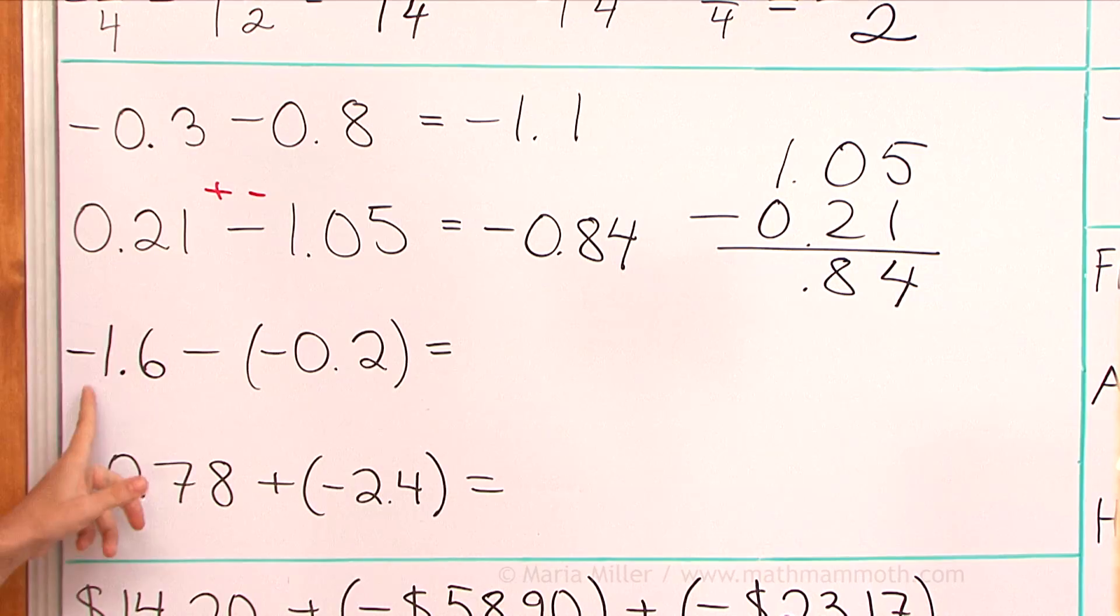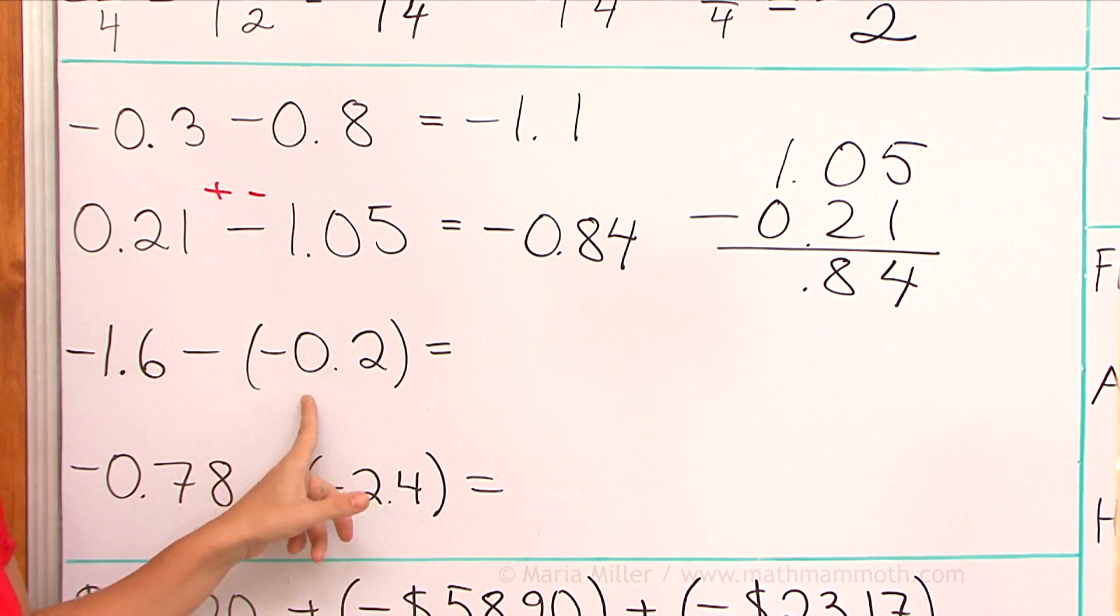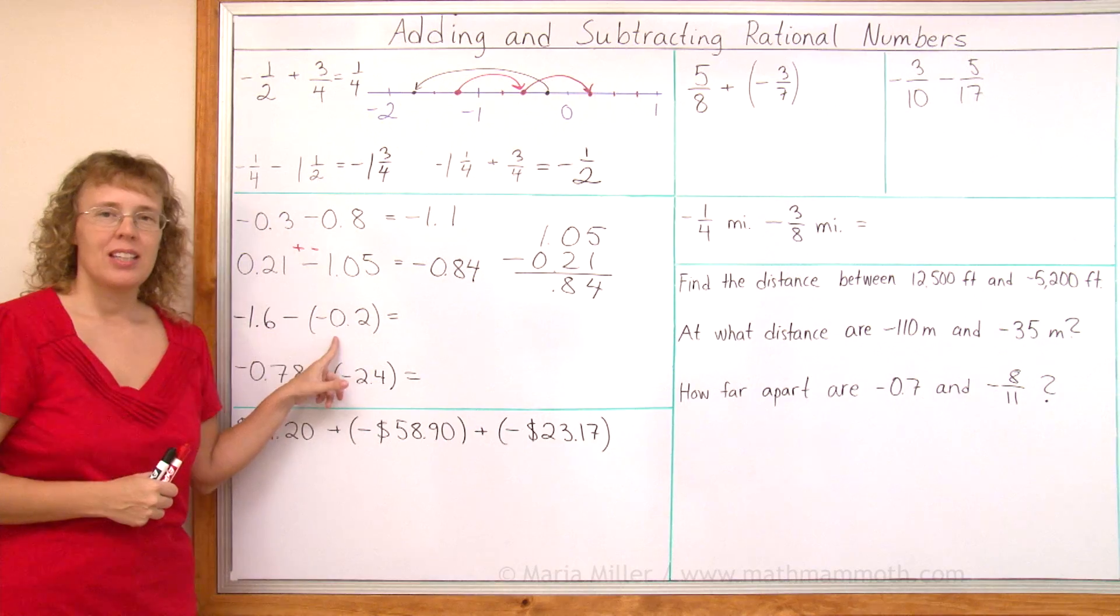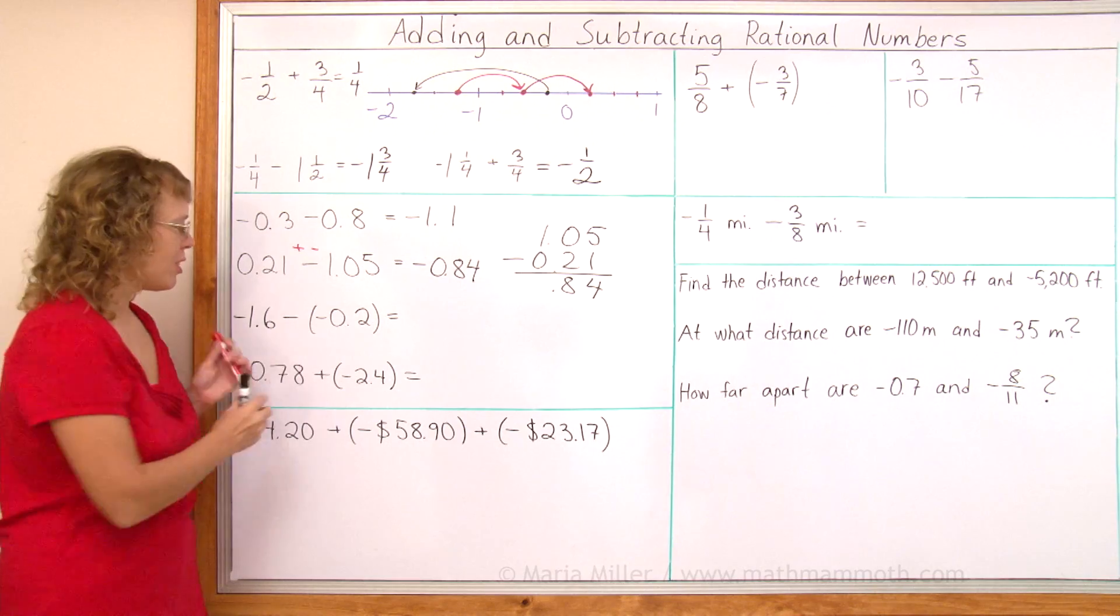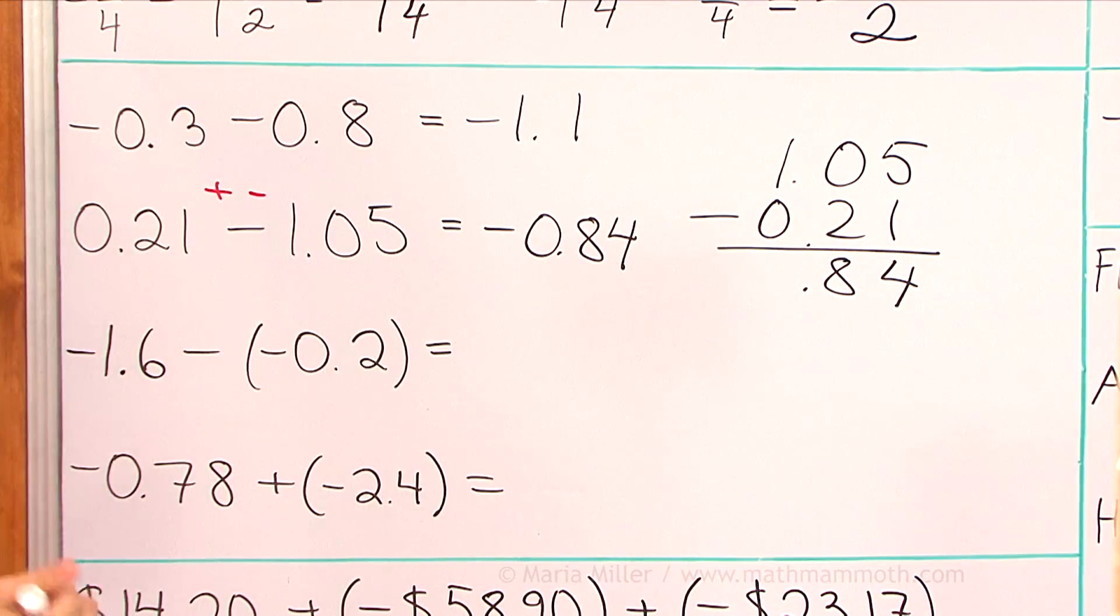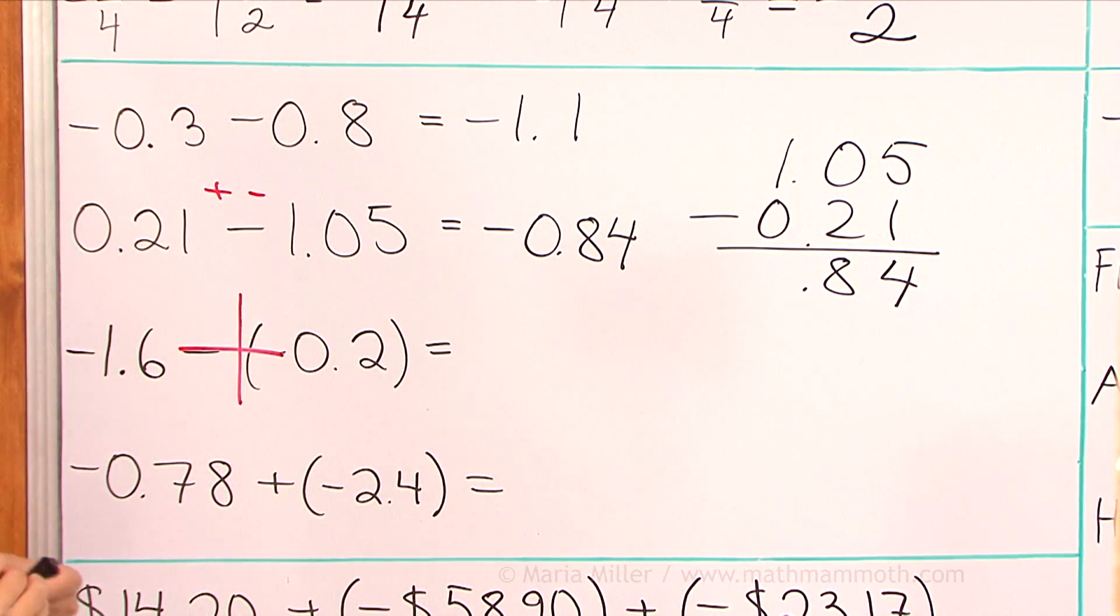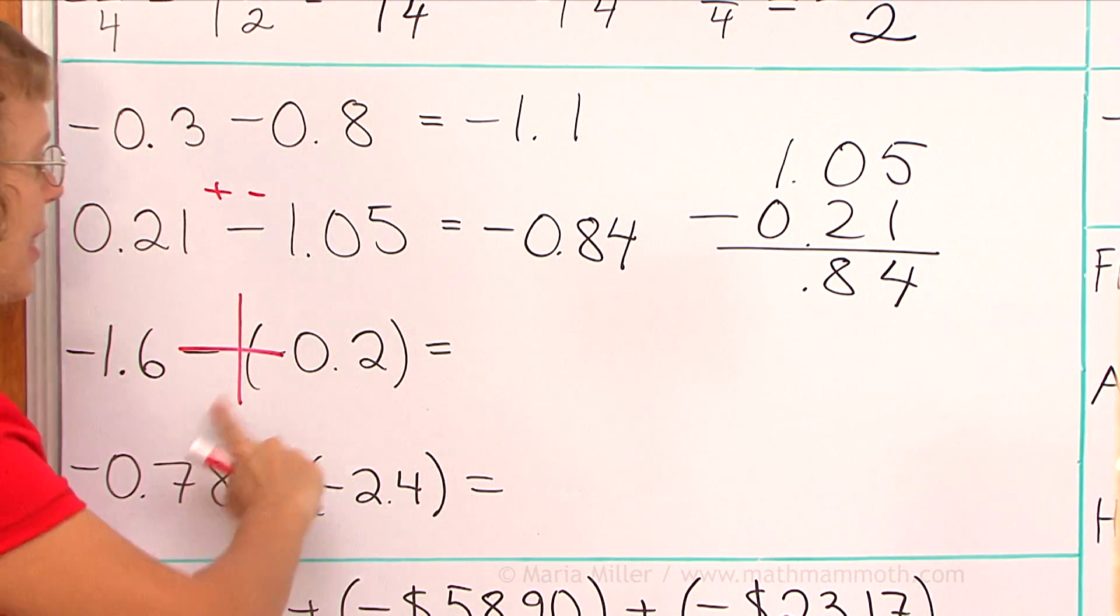Next one, minus 1.6 minus minus 0.2 or subtracting negative two-tenths. Do you remember the shortcut for the double negative, when we're subtracting a negative? You can just write a big plus there. So now we get minus 1.6 plus 0.2.